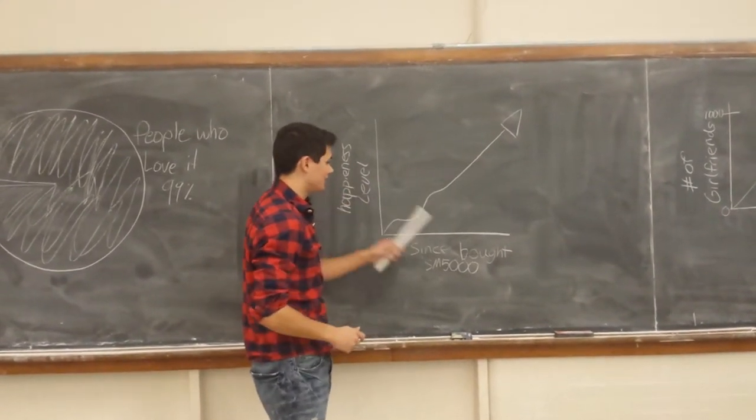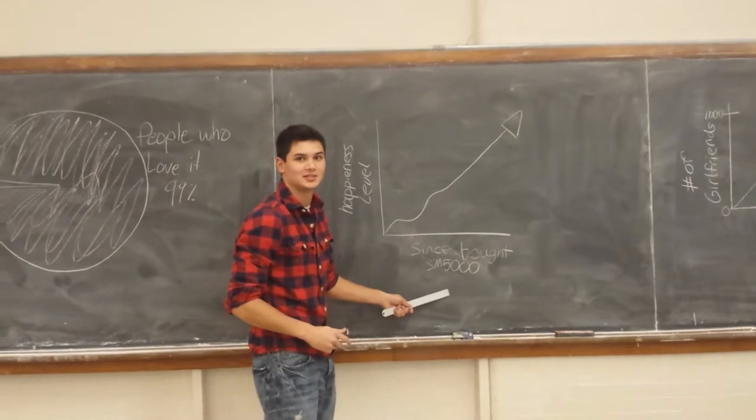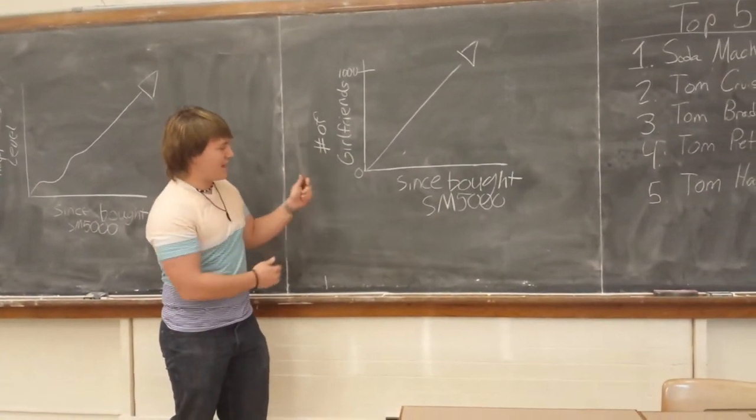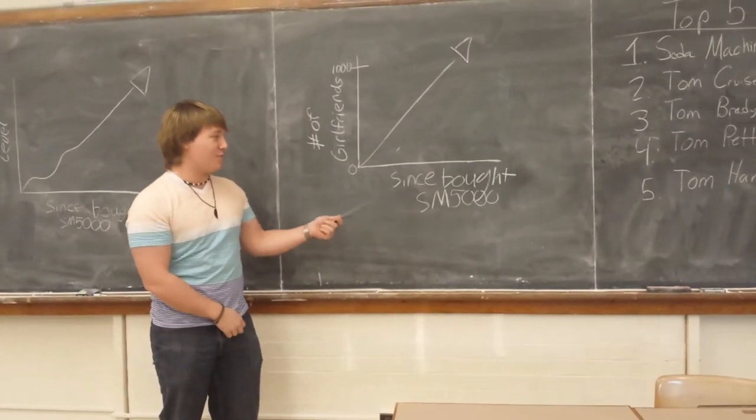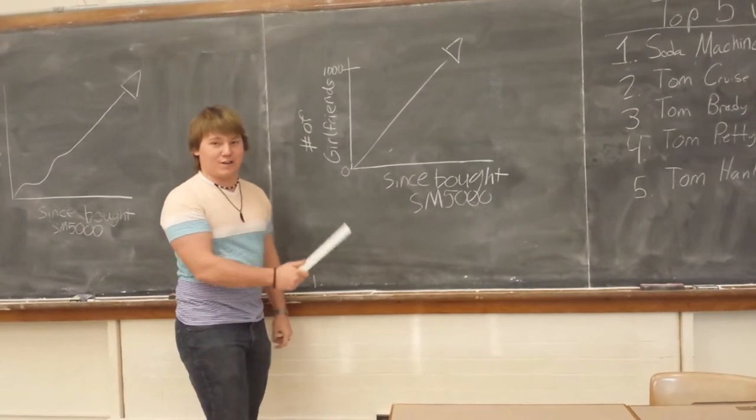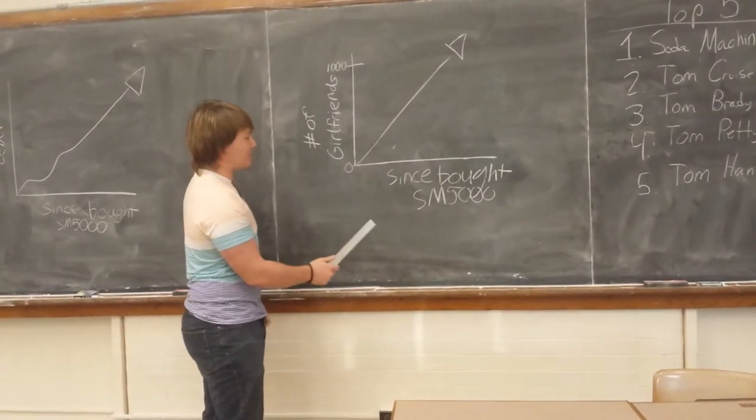We have here, buy the Soda Machine $5,000. We have another skyrocketing graph. And what this one is, is the number of girlfriends and since you bought the Soda Machine $5,000. As you can see here, as soon as you buy it, the amount of girlfriends you're going to have is just going to shoot up drastically.